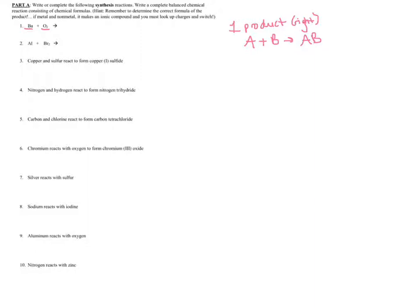When an element has a subscript of two, we call it a diatomic element. There are certain elements that, when found in nature, exist as molecules with two atoms bound together. When that is the case, we need to represent it that way in the formula. There are seven diatomic elements that you should memorize.